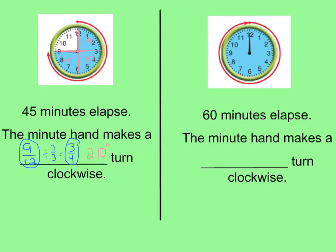Let's look at the last clock. As you can see, this has made a full turn — starting at the 12 and going all the way around, so 12 twelfths is shaded in. Twelve-twelfths equals one whole. Therefore, this has made one full turn clockwise. Dividing into four equal parts shows four-fourths shaded in, and four-fourths equals one whole.